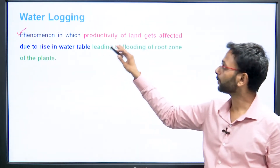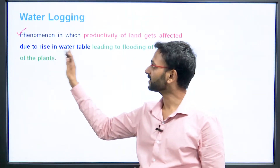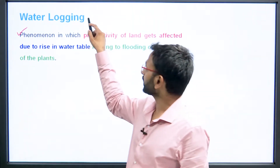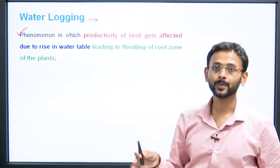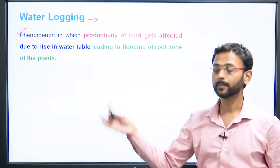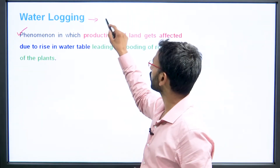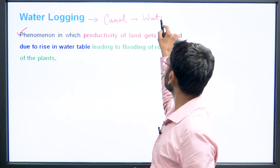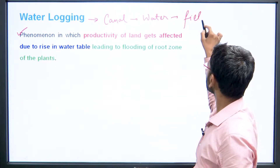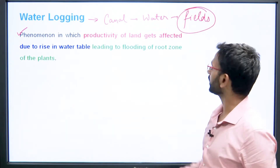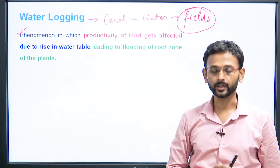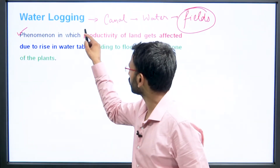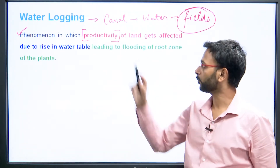Water logging is the phenomenon in which the productivity of the land gets affected due to a rise in the water table, leading to the flooding of the root zone of plants. It is related to the land. We are talking about this because we are talking about the canal and the water which will ultimately be delivered to the fields. Water logging will destroy crops, and it is related to the productivity of the land.